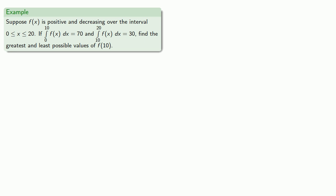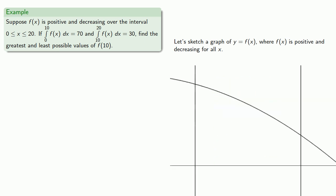So let's sketch a graph of y equals f of x, where f of x is positive and decreasing for all x. And again, if it's not written down, it didn't happen, so let's label.